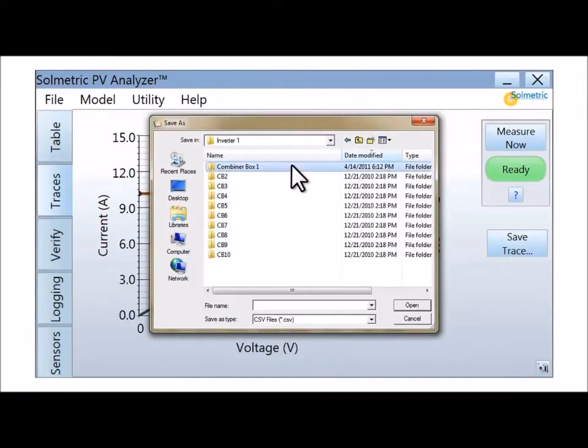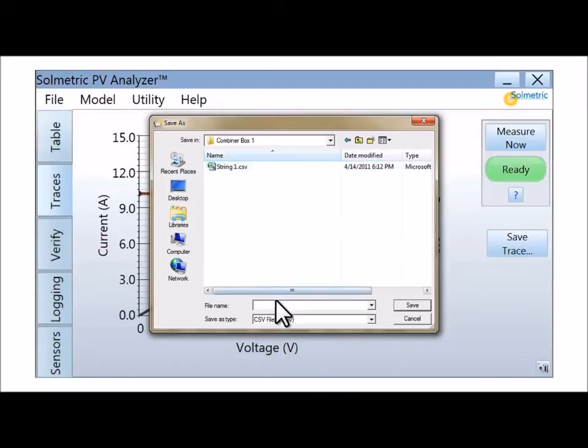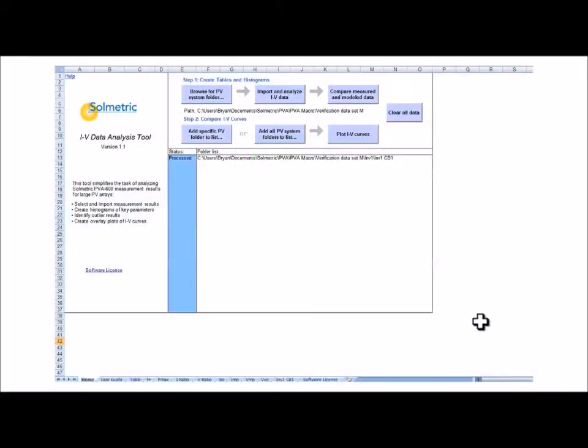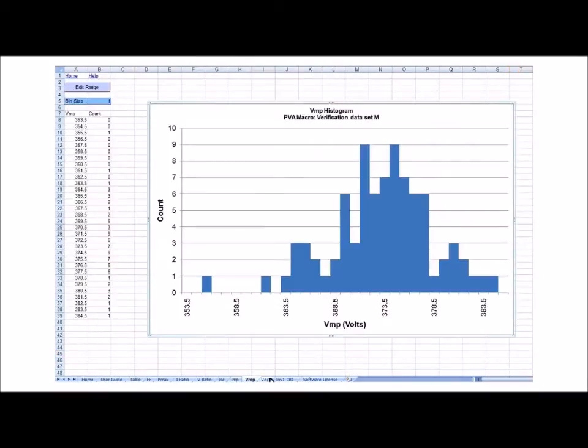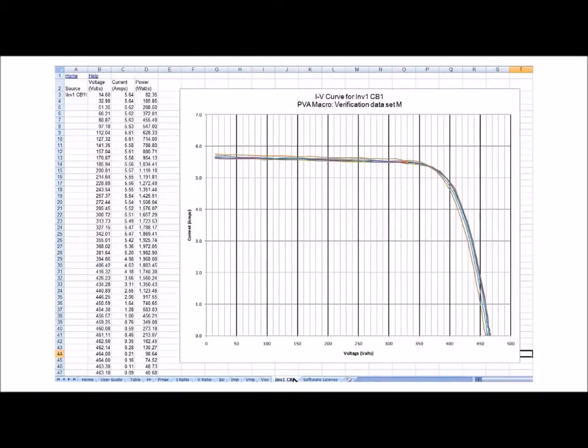Data files include a record of all the measurements made by the PV Analyzer as well as the predictions of the performance model. The IV data analysis tool provides a convenient method of analyzing PV Analyzer data. The tool imports the data from all the saved traces from a site visit and generates tables, charts, histograms, and IV plots that can be used for client reports and to identify problem strings.